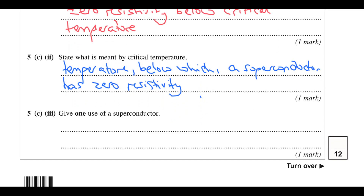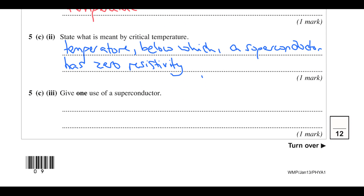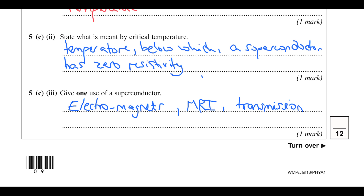Give one use of a superconductor — anything where you want a high current. You could go with electromagnets — for example in an MRI machine. Transmission lines would be an ideal use because there would be no energy losses. You could also use them in particle accelerators — anything requiring high current.